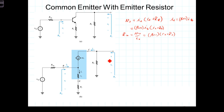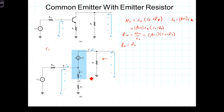The output resistance we can see just from observation is simply R_C, so R_out equals R_C. I should point out that we're omitting the Early effect resistance R_0. In this model, R_0 would come from the collector to the emitter, and it makes back-of-the-envelope hand calculations significantly more complicated. Because R_0 is usually relatively large, we can omit it without too much impact. So the output resistance is simply R_C.